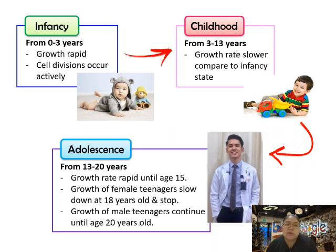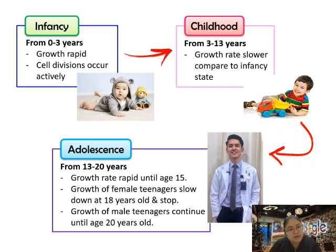Infancy is from zero to three years old. During this part you grow very fast — cell division occurs actively. When you are a baby you learn things very quickly. Childhood is from three to thirteen years old — from kindergarten through primary school. The growth rate becomes lower compared to infancy, but you are still growing, just more slowly.